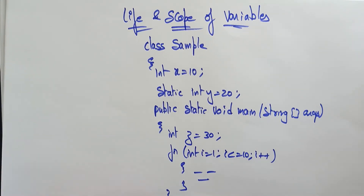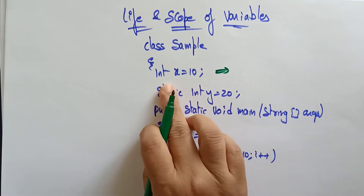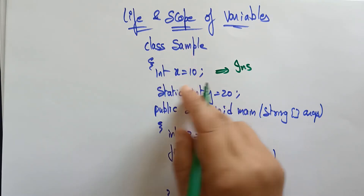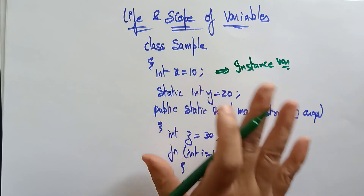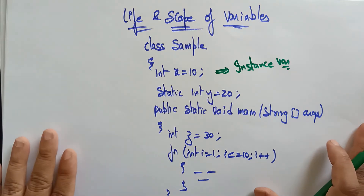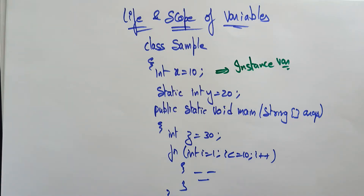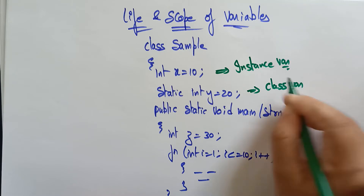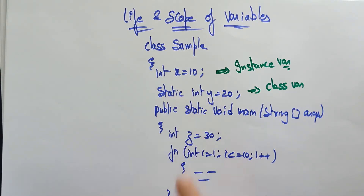So first of all, tell me what type of variables these are. int x is equal to 10 — you call it as an instance variable because it is a member of a class. You have to get complete clarity on which type of variable is instance, which is class variable, and which is local variable. static int y — you call it as a class variable because it is a static member of a class.